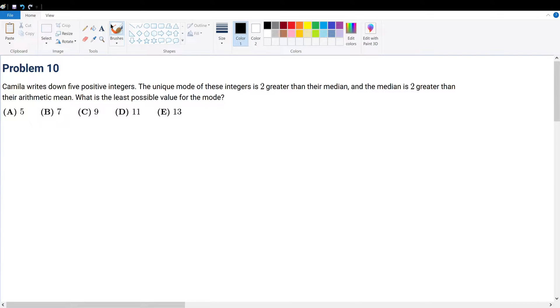Problem 10. Camila writes down five positive integers. The unique mode of these integers is 2 greater than their median, and the median is 2 greater than their arithmetic mean. What is the least possible value of the mode?